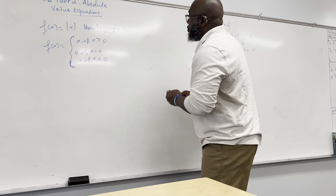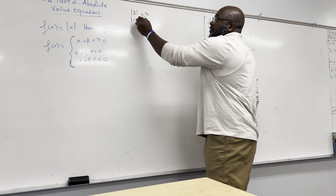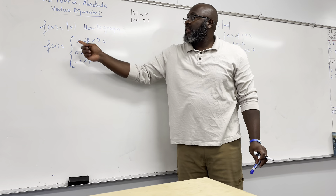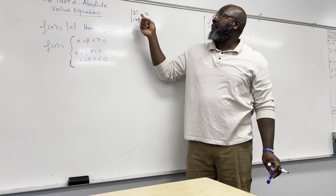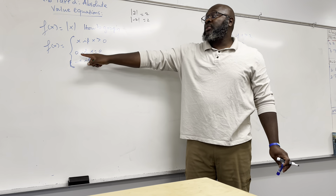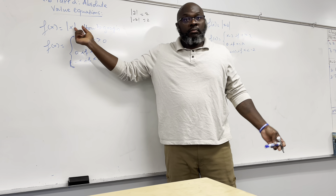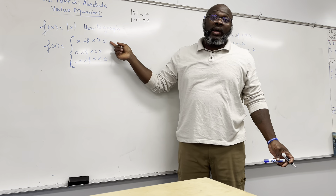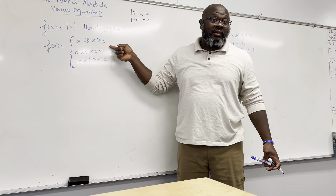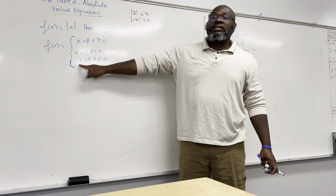For example, what is the absolute value of 2? It's 2. What's the absolute value of negative 2? It's 2. So absolute value of x is going to be x if x is positive — meaning if x is a positive value, it stays the same. Now it's going to be 0 if x is 0. And it's going to be negative x if x is negative.